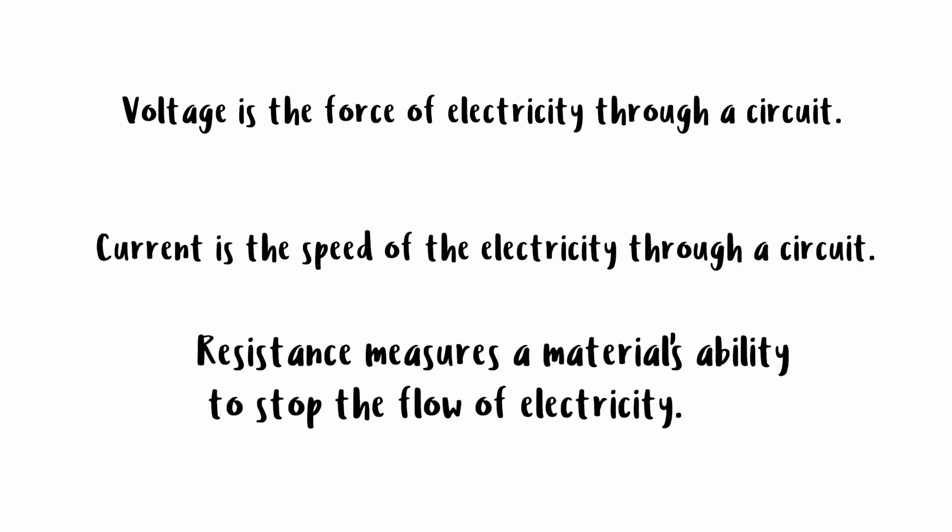To understand how these work together, think of a circuit as a water-filled tank with a hose at the bottom. Voltage is represented by the downward force of the water in the tank. Current is analogous to the speed at which water flows through the hose. And resistance is like the width of the hose itself.